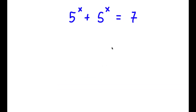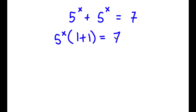So in this problem, I have 5 to the power of x plus 5 to the power of x is equal to 7. To solve this, I'm going to first start by factoring out 5 to the power of x. So now I have 5 to the power of x times 1 plus 1 is equal to 7. Now, 1 plus 1 is 2, so I have 5 to the power of x times 2 is equal to 7.